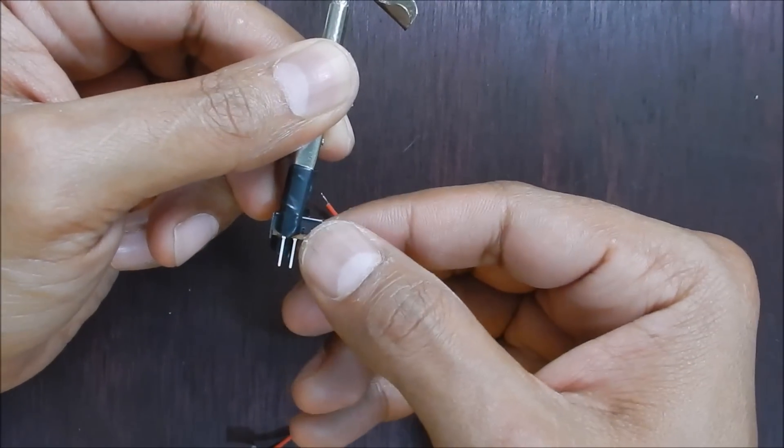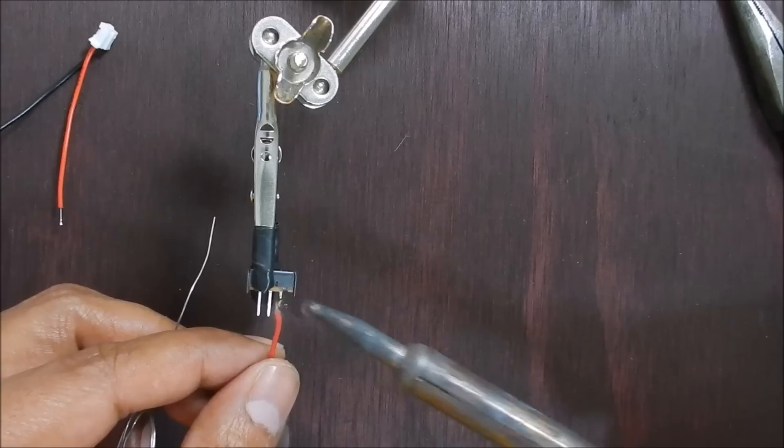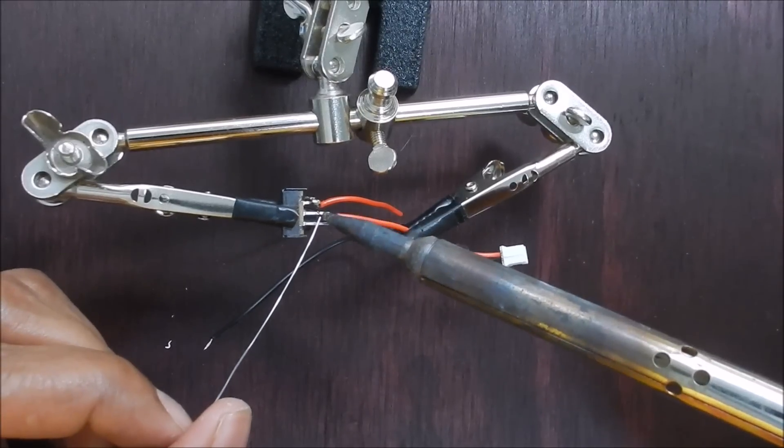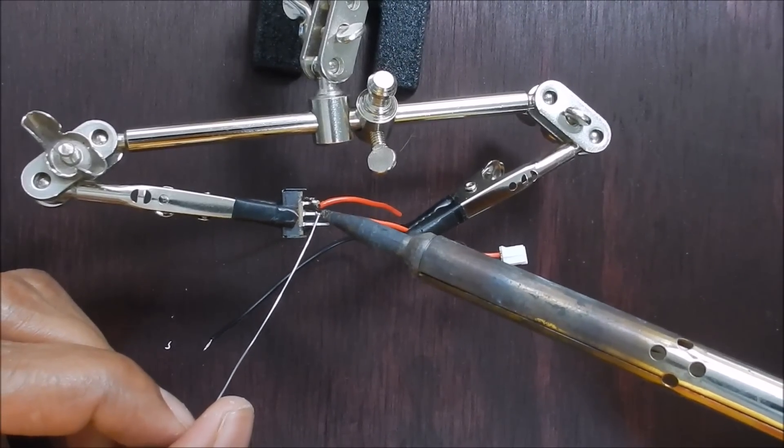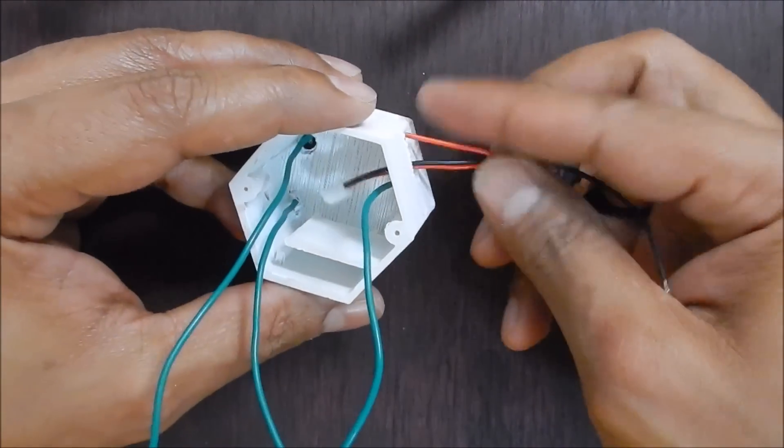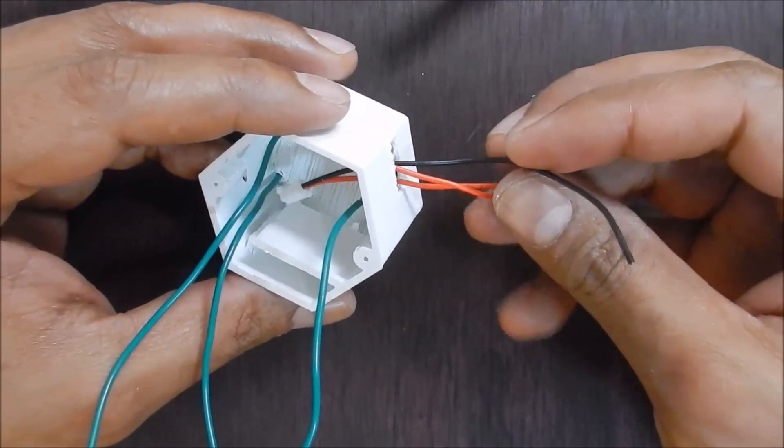Then prepare the switch by soldering some wires to it. Next we will pass the switch harness through the opening in the enclosure and press fit the switch.